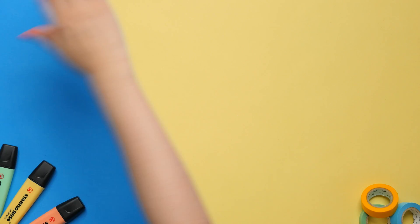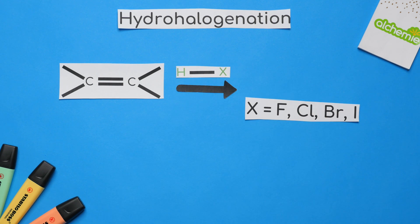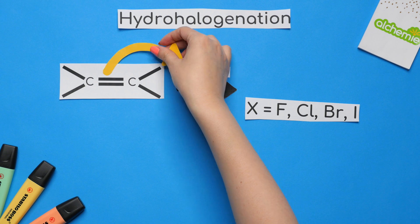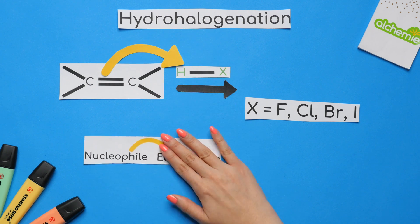Here's a generic hydrohalogenation mechanism where X represents one of these halogens. The reaction starts with the nucleophile, which is our pi bond, grabbing the electrophile, which is our hydrogen, since it has a partial positive charge, and electrons flow from nucleophile to electrophile.